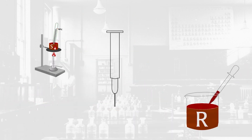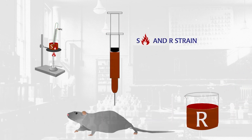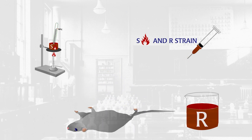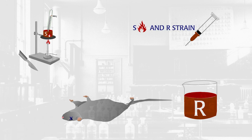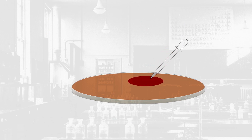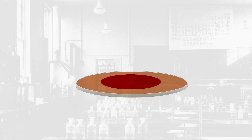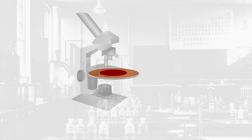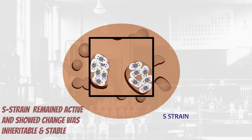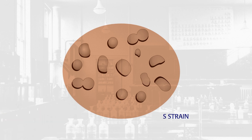Griffith co-injected the heat-killed S-strain with live R-strain into mice. And much to his surprise, the mice developed pneumonia and died. Even more astonishing, Griffith was able to isolate live S-strain from the blood of infected mice. These cultures could infect other mice. S-strain cultured from infected mice remained active, showing that the change was stable and inherited.